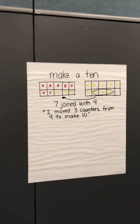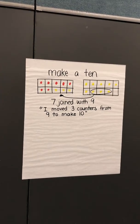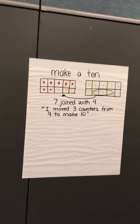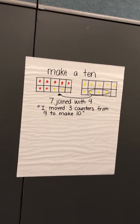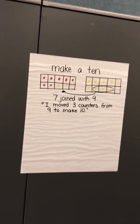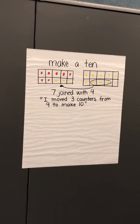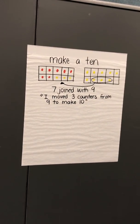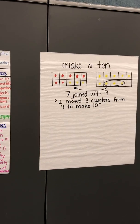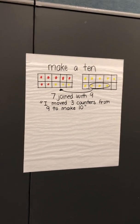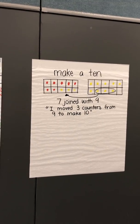This next poster shows a strategy for how you might teach make a 10 using concrete manipulatives, and it also has some action language. You might tell students that they're going to solve the problem of 7 joined with 9. They would build the 7 and then build the 9, and students might respond with, 'I moved 3 counters from 9 to make a 10.' This also hints at the associative property that students need to learn within this cluster.